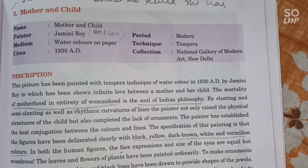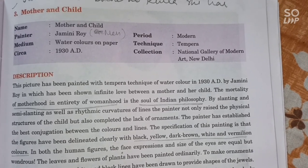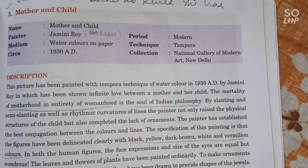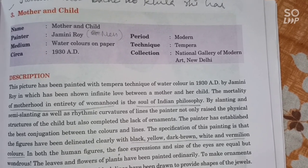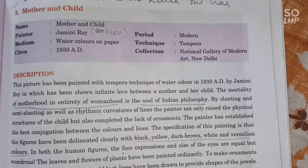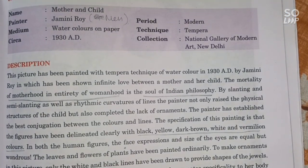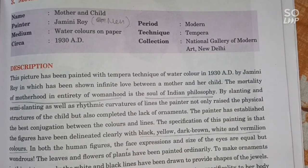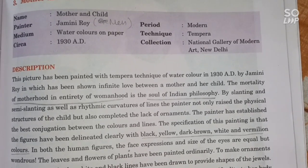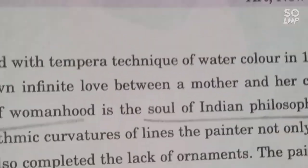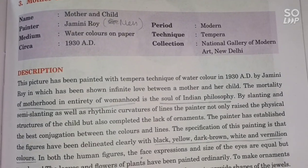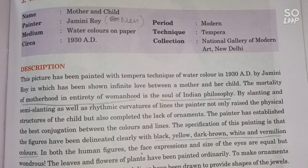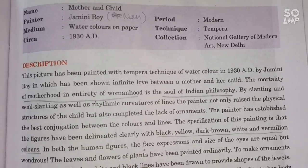Hello and welcome to Intelligent Education System. Today we are going to study the painting 'Mother and Child' under the paintings of contemporary modern Indian artist. Name of the painting is 'Mother and Child', painter: Jamini Roy, period: Modern, medium: watercolor on paper, circa 1930 AD, technique: tempera, collection: National Gallery of Modern Art, New Delhi.